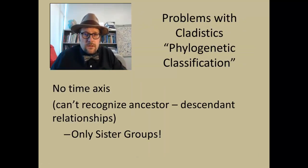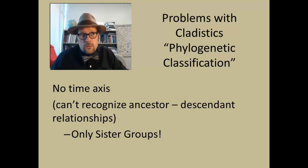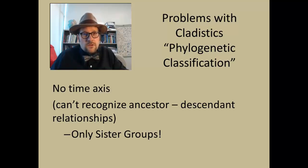There are a couple of problems with cladistics and phylogenetic classification. First, there is no time axis — you cannot recognize ancestor-descendant relationships. If one species evolved directly into another, it won't be depicted that way on a cladogram; instead it would show species A as a sister group or sister branch to B. There is simply no way to use cladistics to show ancestor-descendant relationships.